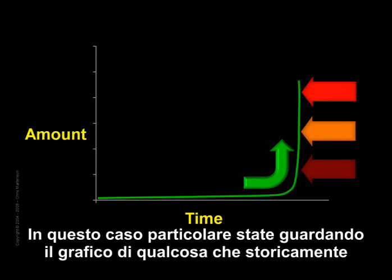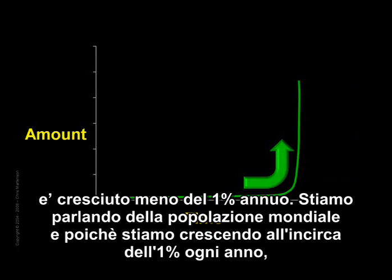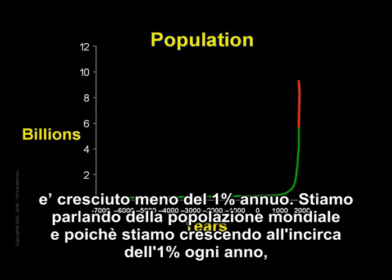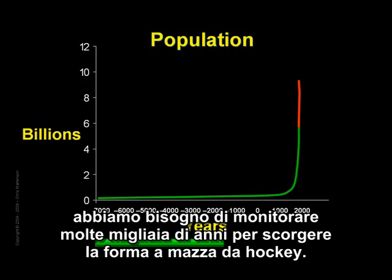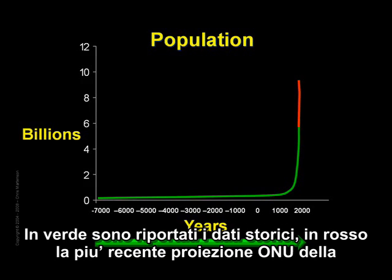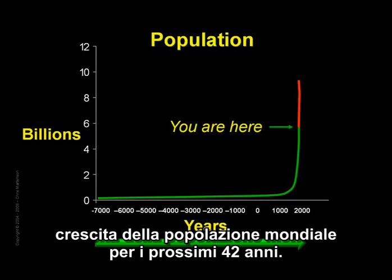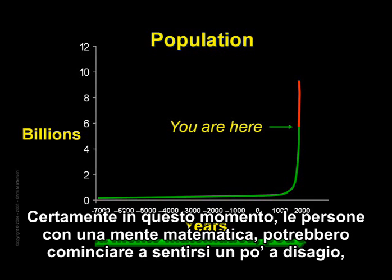In this particular case, you are looking at a chart of something that historically grew at less than 1% per year. It is world population, and because it is only growing at roughly 1% per year, we need to look at several thousands of years to detect this hockey stick shape. The green is history, and the red is the most recent UN projection of population growth for just the next 42 years.